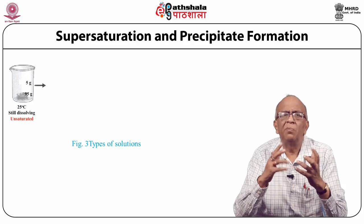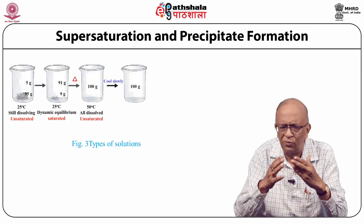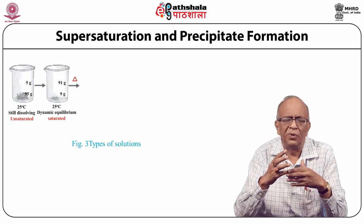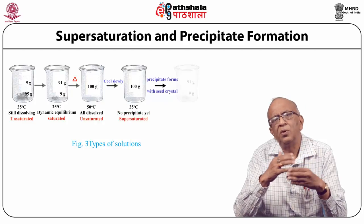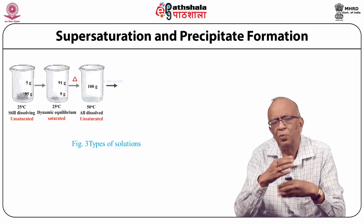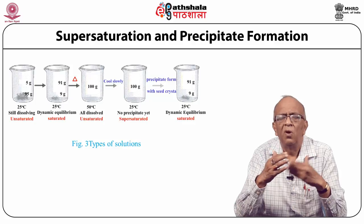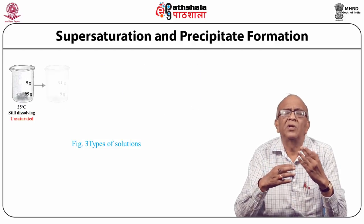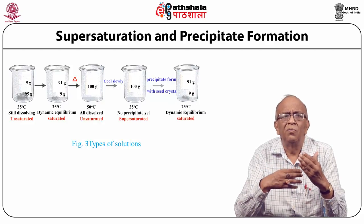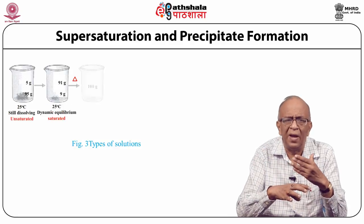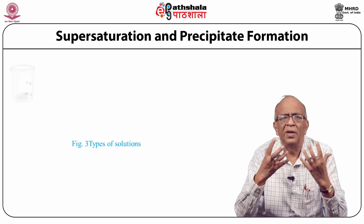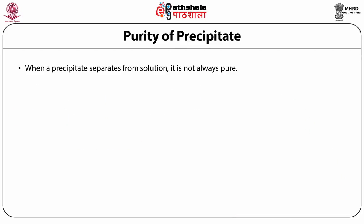During precipitate formation in gravimetric analysis, it is very important to avoid the stage of supersaturation, as it may affect particle size and hinder the process of precipitation. To avoid supersaturation, precipitation should be carried out in hot, homogeneous solutions. The precipitant should be added gradually and the solution should be smoothly stirred so that a larger particle size is obtained.